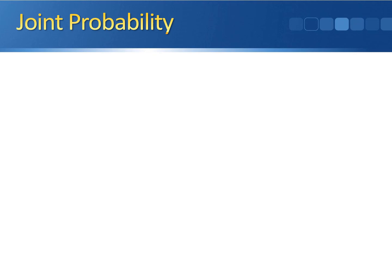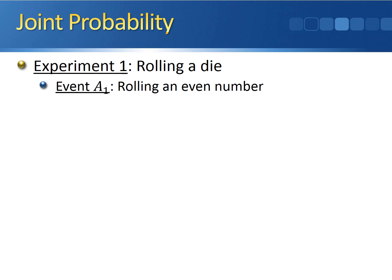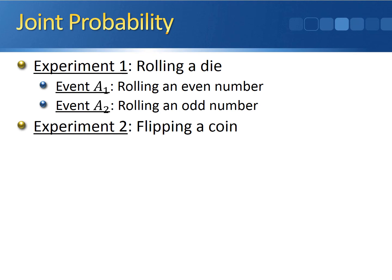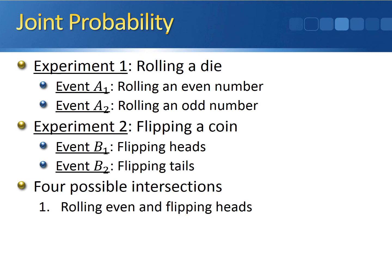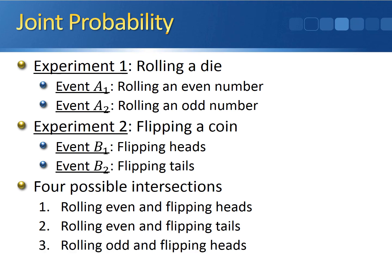Now that we have both experiments defined, we can figure out the different joint probabilities we'll be able to calculate. Experiment 1 is rolling the die: event A1 is rolling an even number, and event A2 is rolling an odd number. For experiment 2, flipping the coin: event B1 is flipping heads, and event B2 is flipping tails. With two possible events per experiment, there are four possible intersections: rolling even and heads, rolling even and tails, rolling odd and heads, and rolling odd and tails.